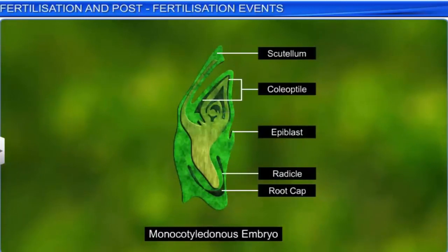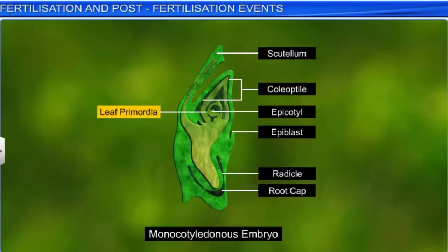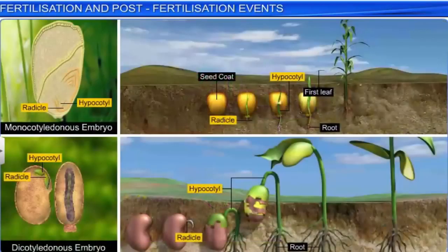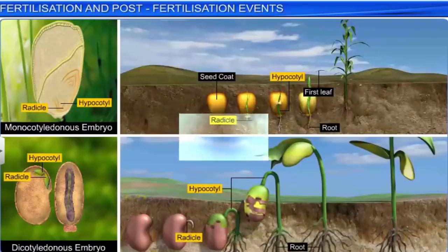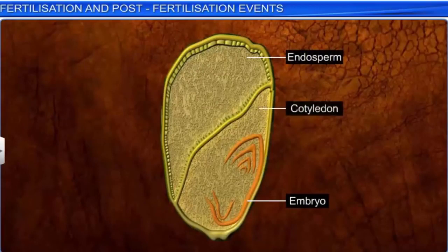The upper portion of this axis, known as the epicotyl, lies above the attachment of the scutellum. The epicotyl has a shoot apex and a few leaf primordia enclosed in the coleoptile — a hollow foliar structure. The lower end of the embryonal axis has the radicle and root cap, covered in an undifferentiated sheath called the coleorhiza. The various parts of the embryo develop differently as the seed germinates. In this manner, the embryo as well as endosperm develops from the zygote and primary endosperm cell, after fertilization has taken place in flowering plants.